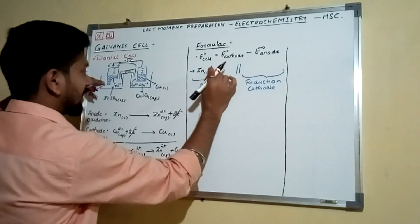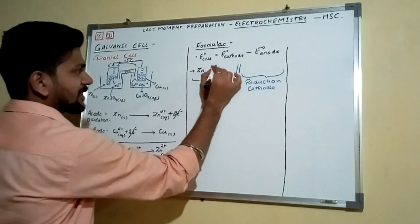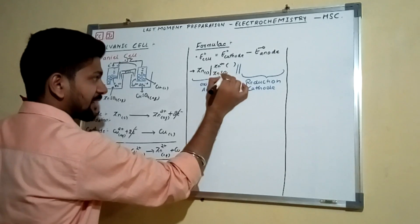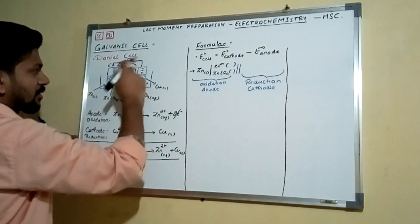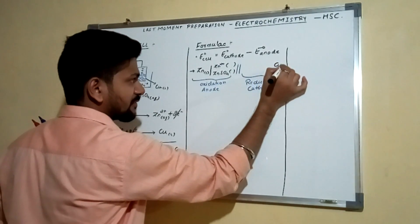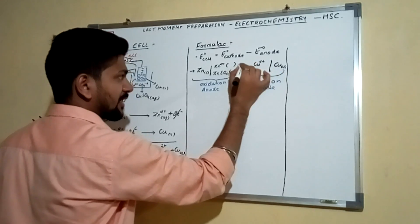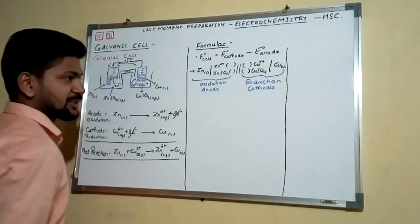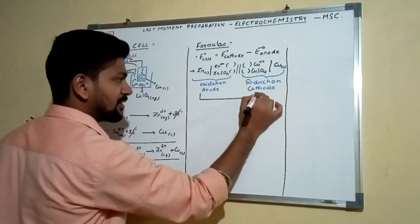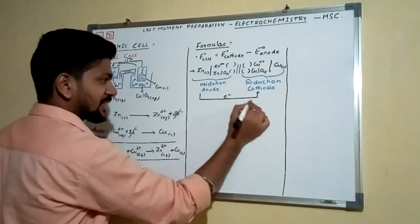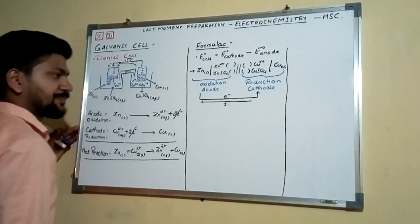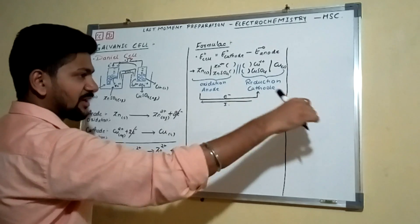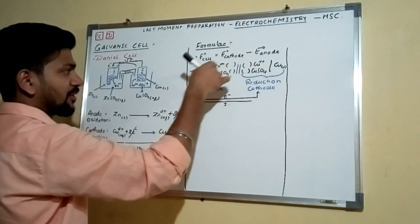For the Daniel cell representation: start from the left with the zinc rod (solid), a single line for rod-solution contact, then Zn²⁺ concentration (or ZnSO₄ concentration), then double lines for the salt bridge, then Cu²⁺ concentration (or CuSO₄), a single line, and the copper rod (solid). Electrons flow from left to right; current flows in the opposite direction. To identify E°cathode and E°anode, look at the reactions and given conditions.